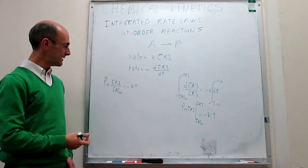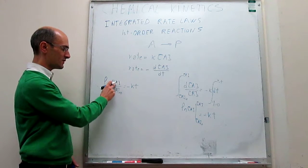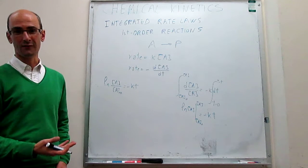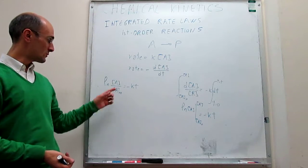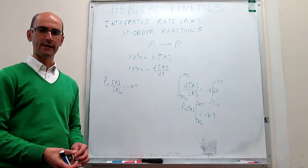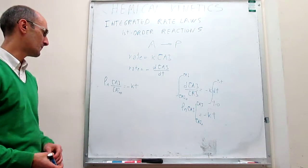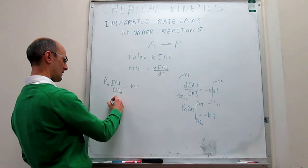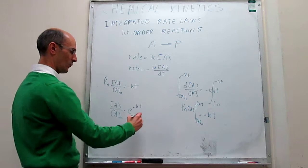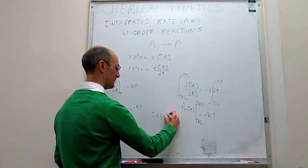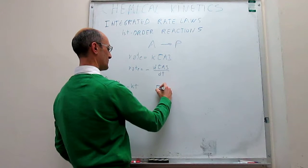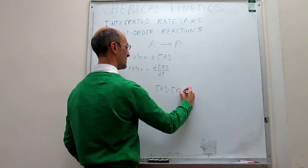We can represent this, and this is how we have a functional dependence of the concentration of A on time. However, this is not very useful because we have the natural log of the concentration of A rather than [A] itself. Something more useful would be to actually solve this expression for the concentration of A, so that we can compare it directly to other orders like zero-order and second-order. So we can solve for [A] by exponentiating: [A] equals A-naught times e to the minus kT.